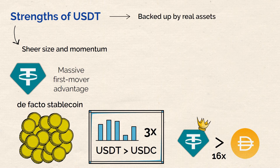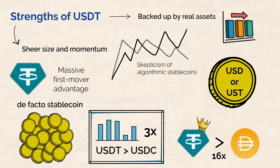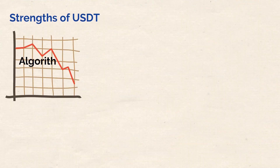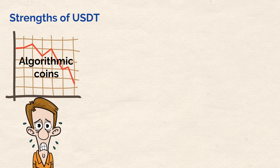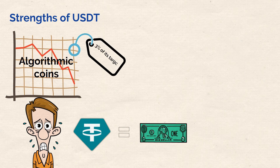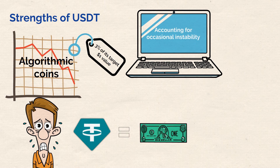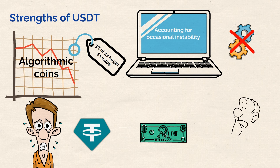The second biggest strength of USDT is that it is backed by real assets and generally remains quite stable. This is important especially considering the market's ongoing skepticism of algorithmic stablecoins following the Terra UST crash in 2022. Tether USDT has generally remained stable regarding its peg to the US dollar — even on the rare occasion it was not perfectly aligned, its price difference remained within three percent of its target one-dollar value.